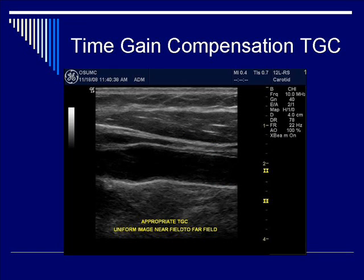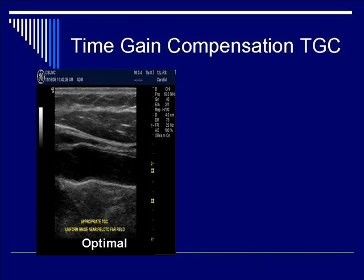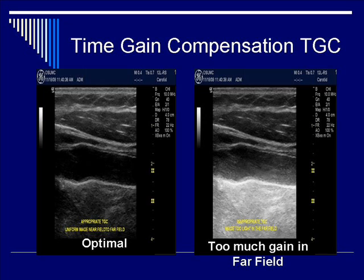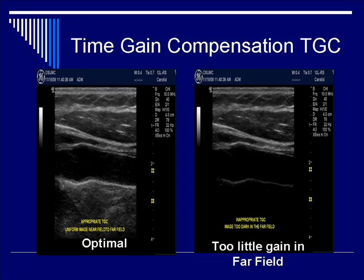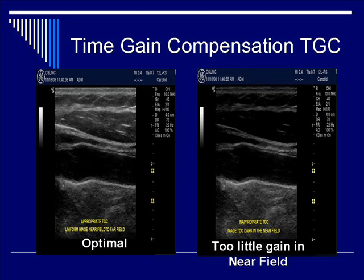Here is an ultrasound image of an appropriately adjusted surface vessel — it is optimal. Now let's show some non-optimized TGC images. On the left side is optimal. On the right side, there is too much gain in the far field, so the gain was turned up too much at higher depths. On the other side, there is too little gain in the far field — you need to bump that up. In the near field, there is too much gain, so you need to turn that down. Finally, you can have a case of too little gain in the near field, requiring you to turn up the slider bar at shallower depths.